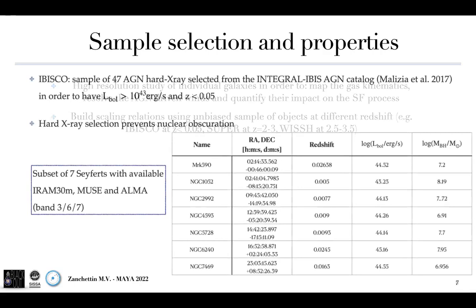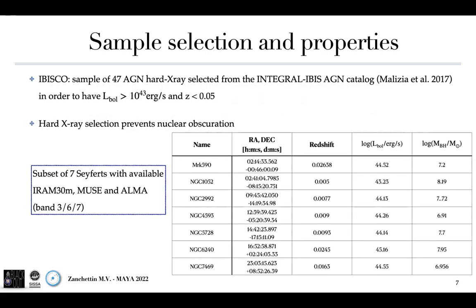In my work, I mainly focus on a sample of local Seyfert galaxies, the BASS sample. This sample presents 47 AGN, X-ray selected in order to prevent nuclear obscuration bias, selected from the integral BASS AGN catalog by Manzari et al. 2017, in order to have bolometric luminosity above 10^43 erg/s and redshift below 0.05. For this sample, I mainly focus on a subset of seven Seyferts with available IRAM 30m, MUSE, and ALMA data in order to perform a multiphase study.